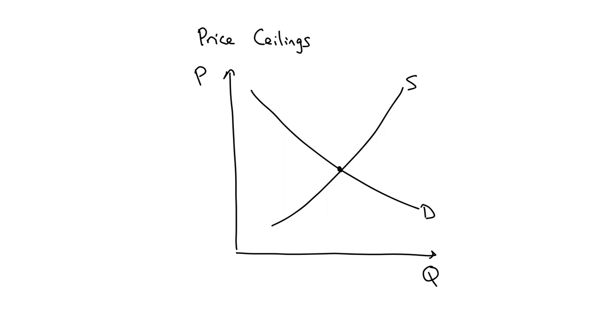We have a downward sloping demand curve. And we see that this point here is at a price of 15 and at a quantity of 150.